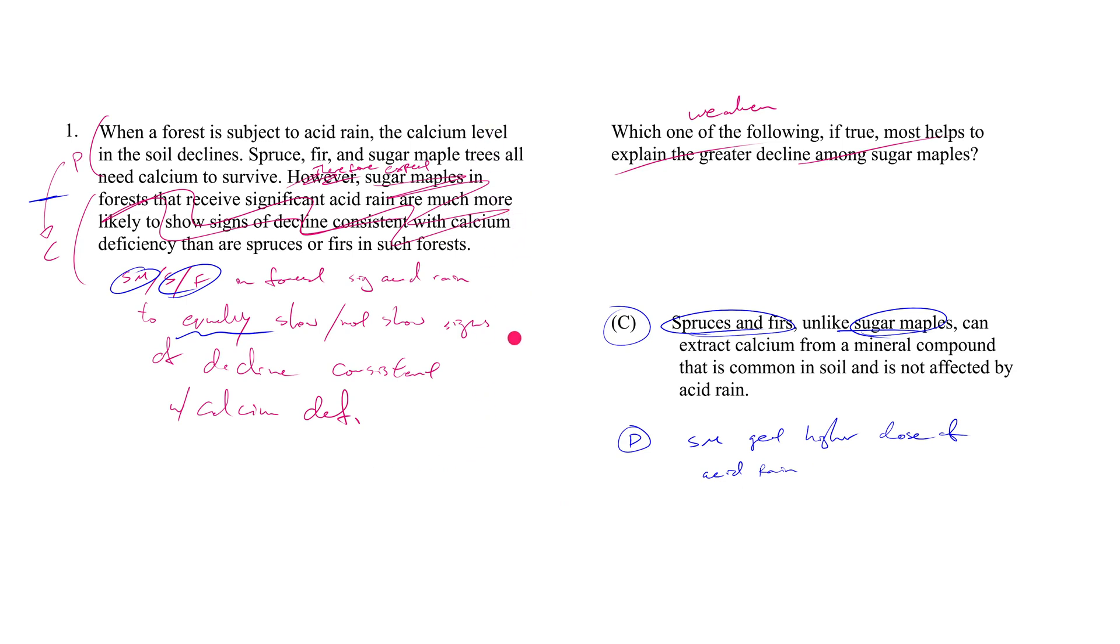And this was the hypothesis that we had contemplated earlier when we talked about how you don't want to assume uniformity in how the acid rain hits the forest. It depends on the canopy, it depends on the landscape, the topography. Maybe acid rain pools in certain areas.